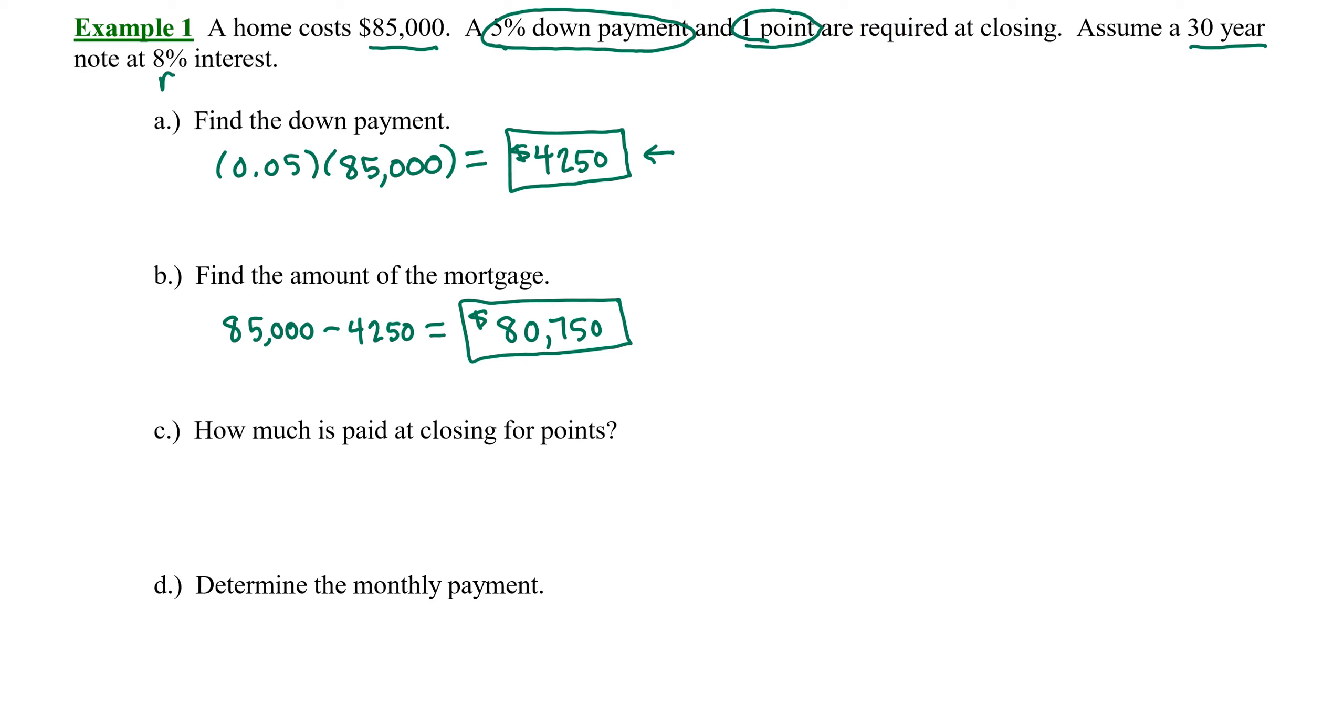Now before we get into calculating the house payment, there's one more hoop we have to jump through. There is a fee that we have to pay to the lender. This particular loan setup has one point required at closing. So remember one point is code for 1% of the loan amount. Now the down payment, this 5% was applied to the price of the home. However, one point, we're paying 1% of the amount that we're actually borrowing from the lender. So we need to calculate 1% of $80,750.